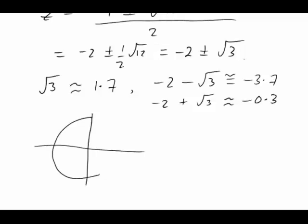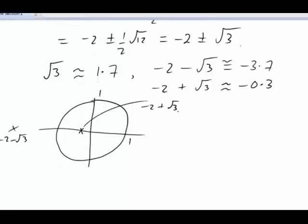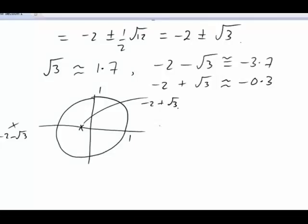Let's draw those in the complex plane. Here's our unit circle, radius 1. Clearly negative 2 minus root 3 is minus 3.7. That's way over here on the negative real axis. On the other hand, minus 2 plus root 3 is inside. Round about at minus 0.3. So we've got one pole inside the circle.